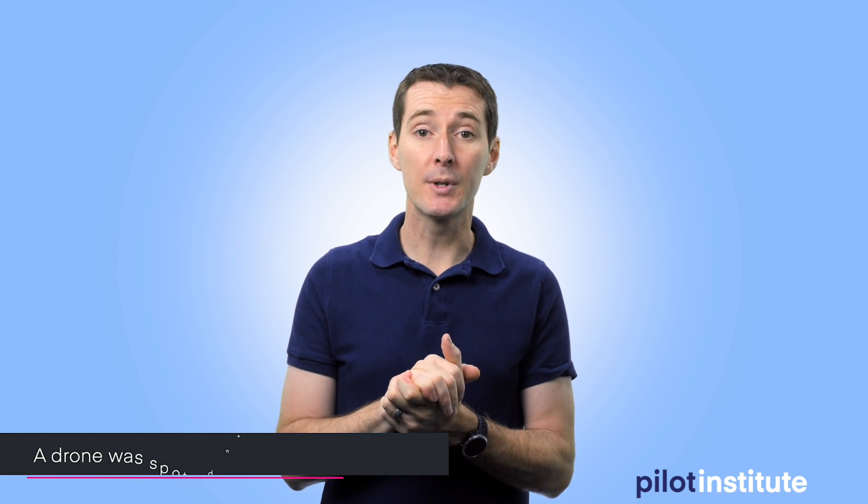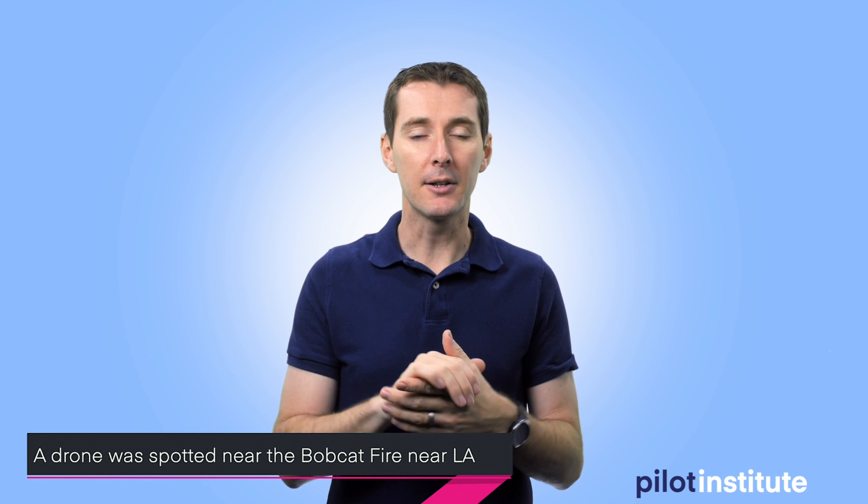The next thing: a drone stopped wildfire operations near the Bobcat fire near LA. It caused the entire fleet of firefighting airplanes to stop flying. Please, please, please do not fly around wildfires. If you do, they can't fly—it's really that simple.